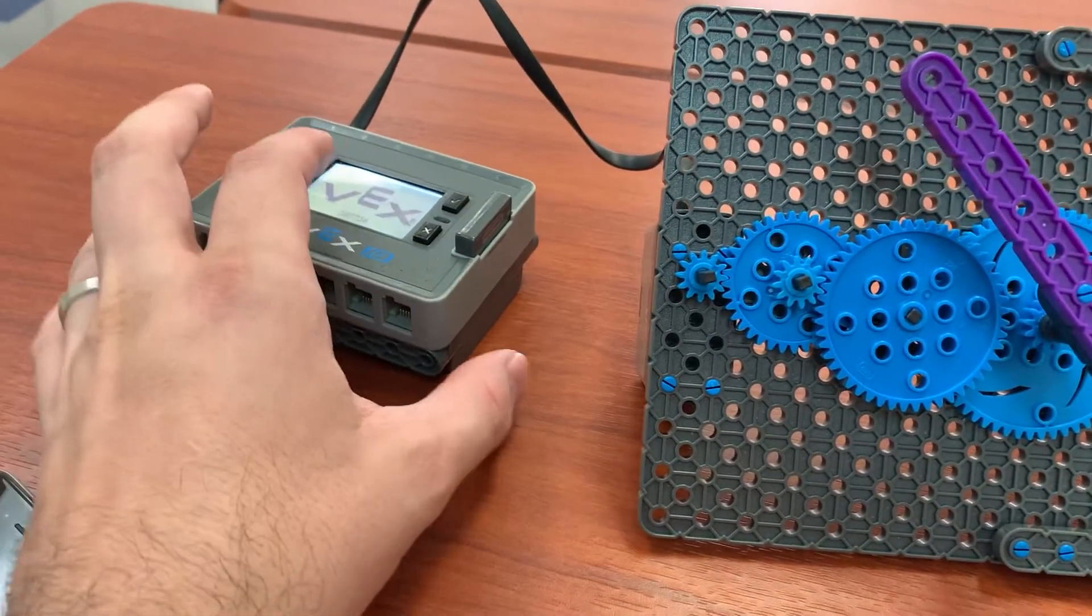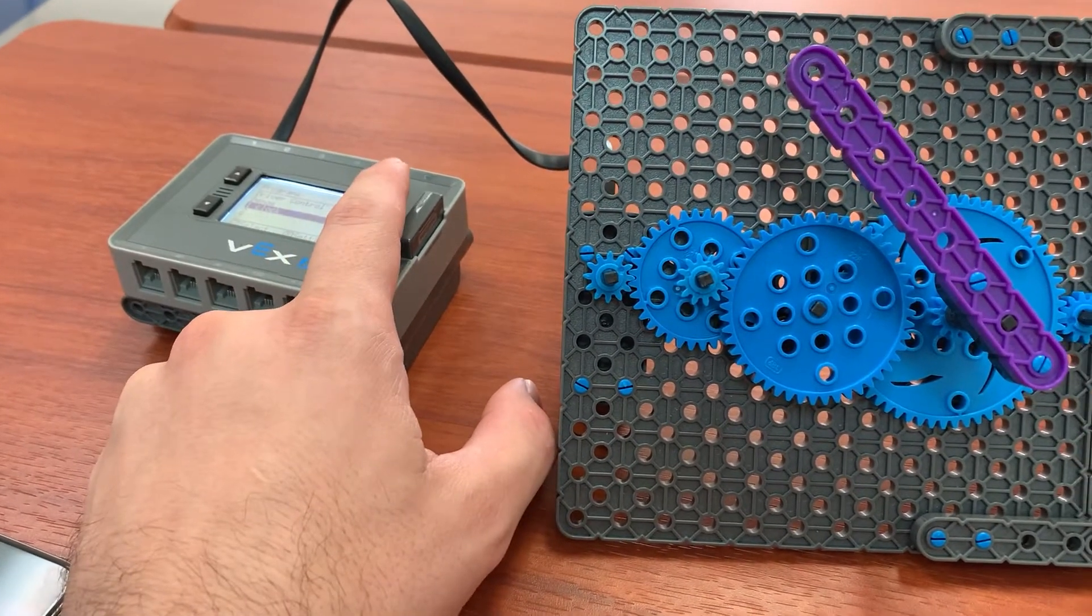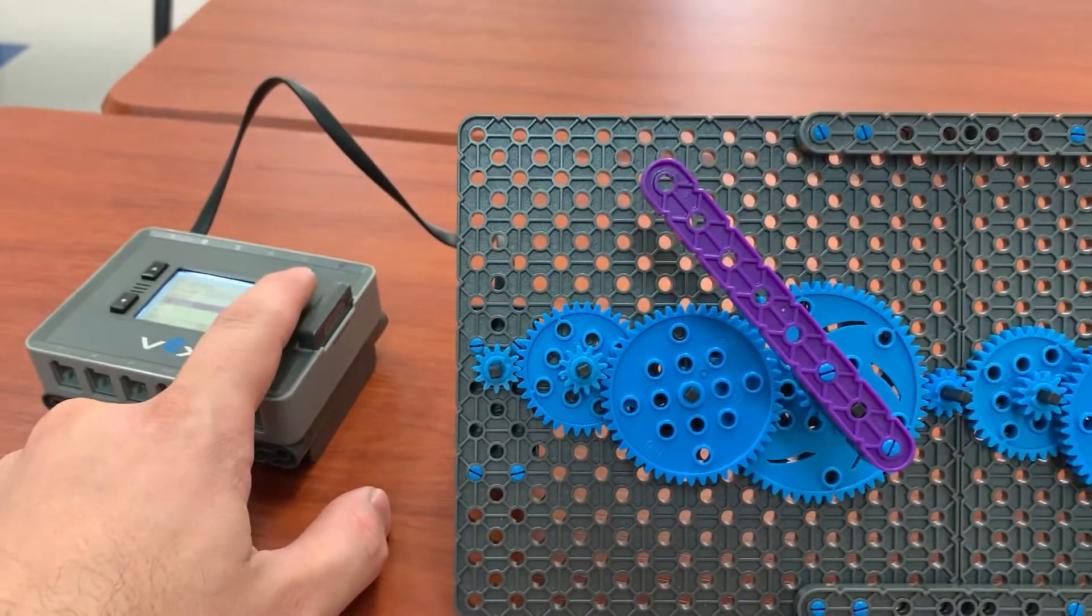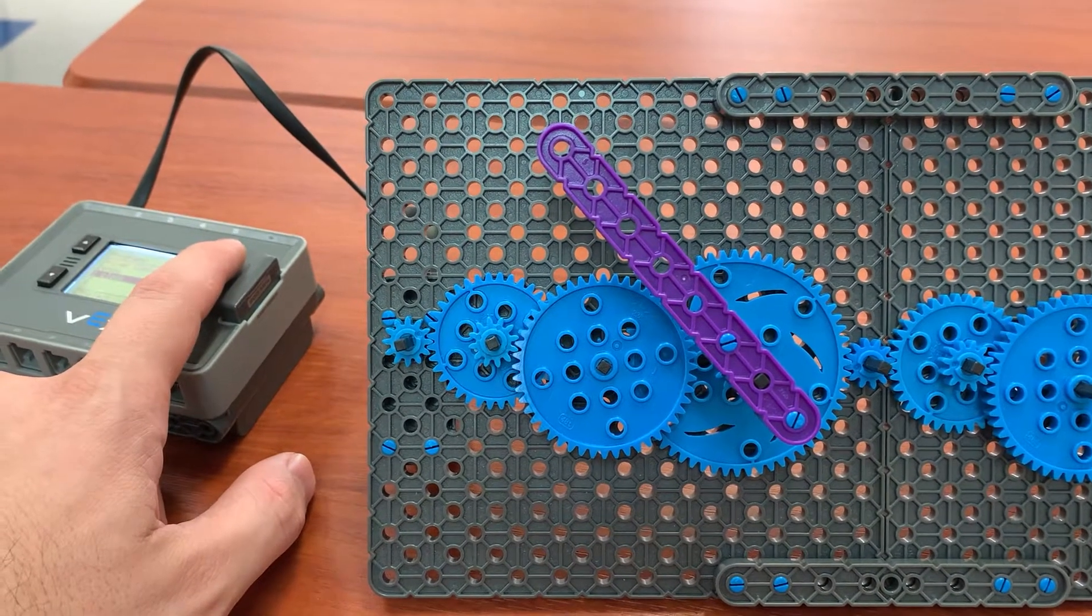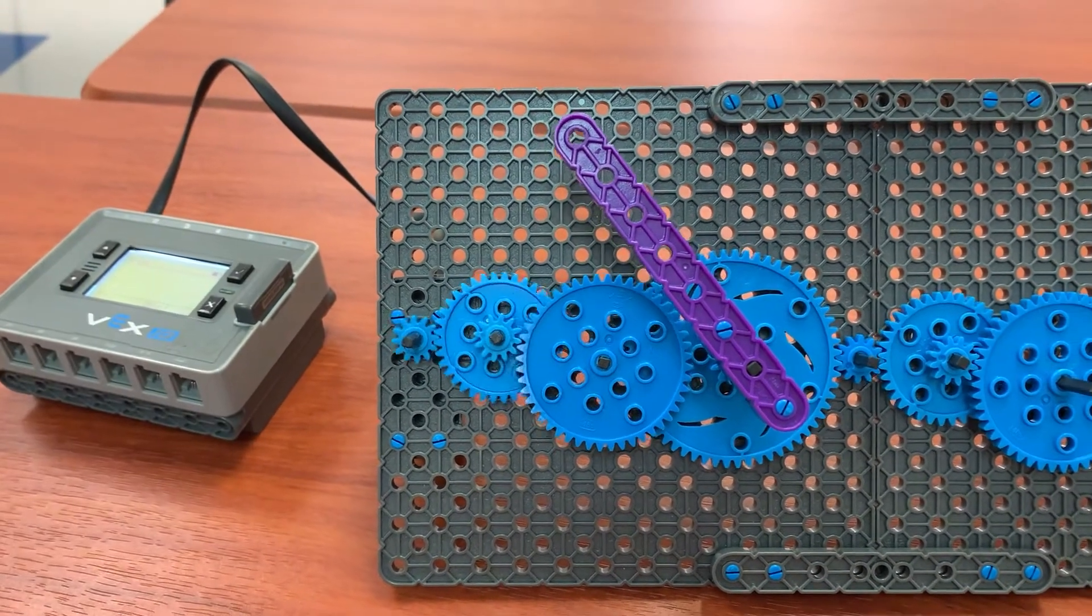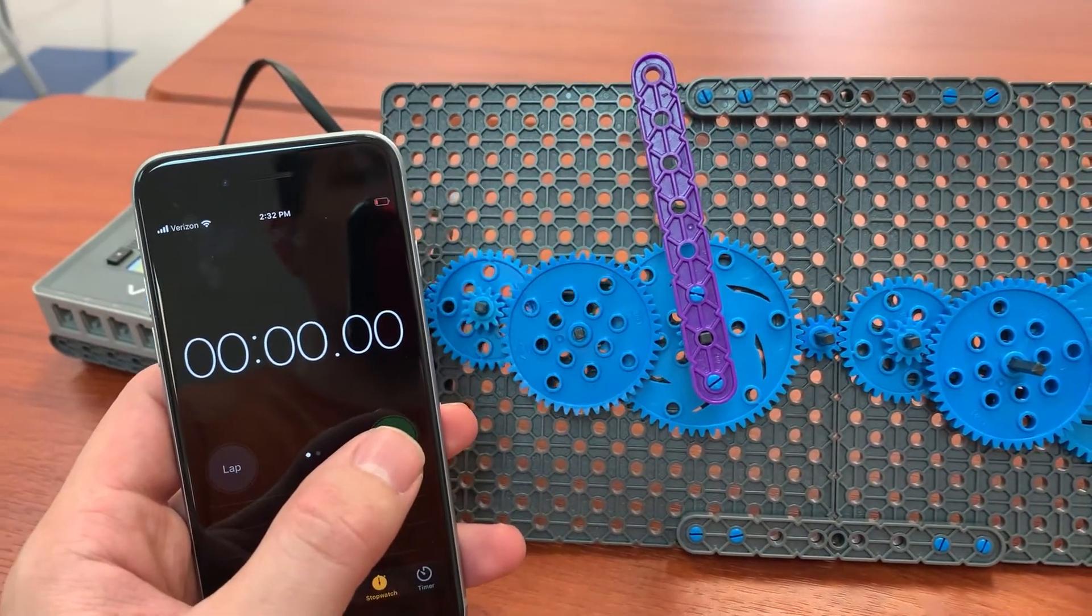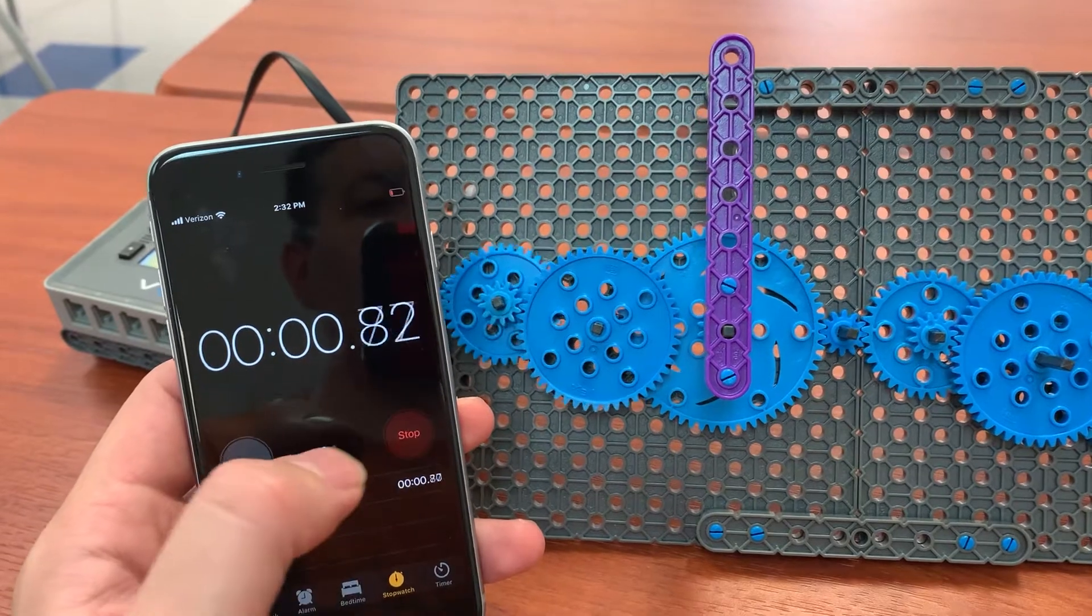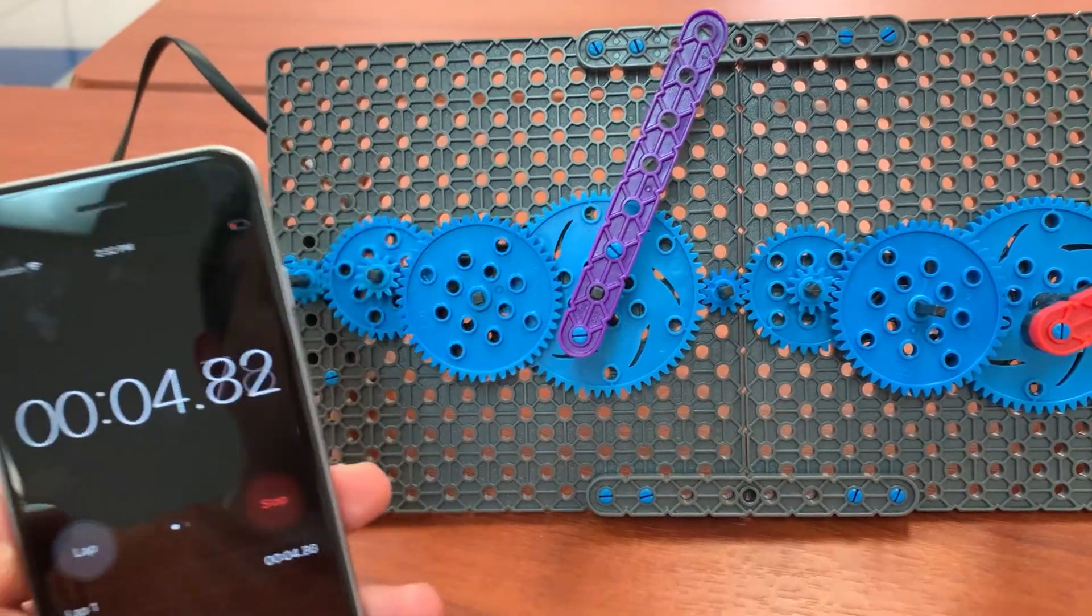So let me turn this on and I've got a stopwatch here and we're going to look at how accurate this is. I got the minute hand is starting a little bit before the 12 o'clock position. So once it gets to the 12 o'clock position, I'm going to turn the stopwatch on. I've got the stopwatch here and go. All right, so let's see how accurate the minute hand is.